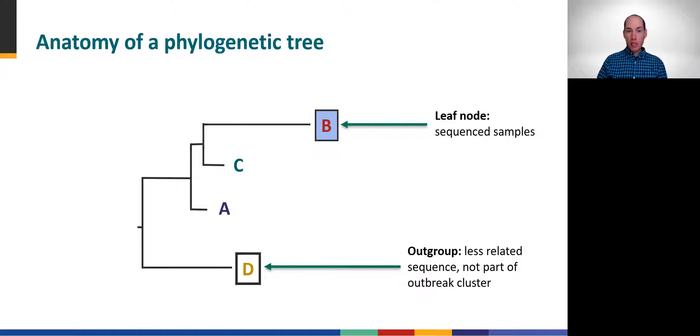The leaf nodes of the tree are our sequence samples, marked here A through D. The outgroup, D, is just a special leaf node that represents a sequence sample we know is less related to the others. In this example, isolate D provides a clear, separated reference point to help visualize the relationships between isolates A, B, and C.